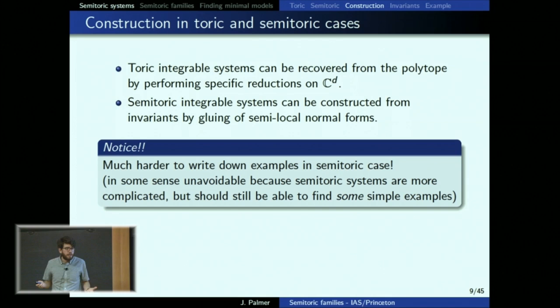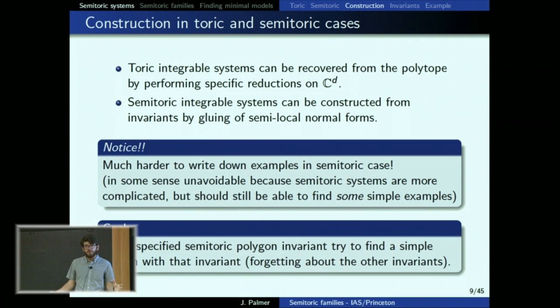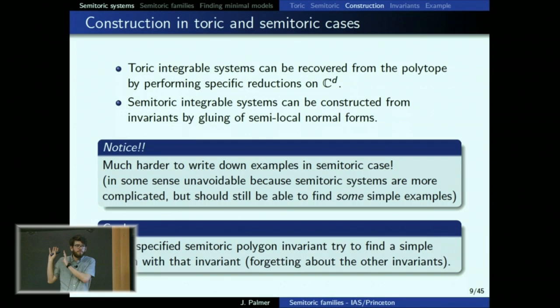My goal is that there should be some simple examples we can write down. There was essentially one explicit compact example previous to this work. So the approach is to fix some of the invariants — fix the polygon invariant and the number of focus-focus points — and ask: can we write down a simple example with those invariants? Then let the Taylor series and the twisting index, the more complicated invariants, be whatever they need to be so that the example is simple.